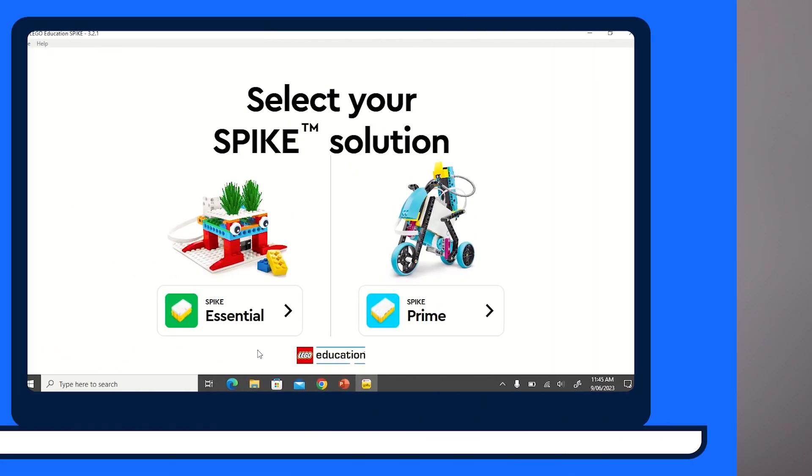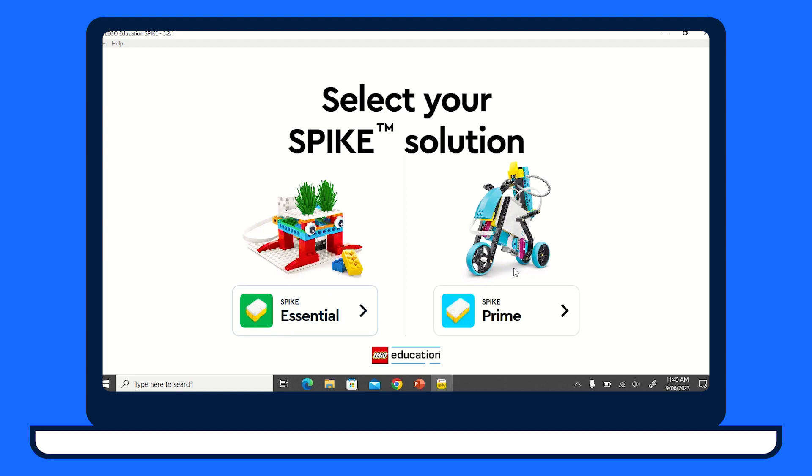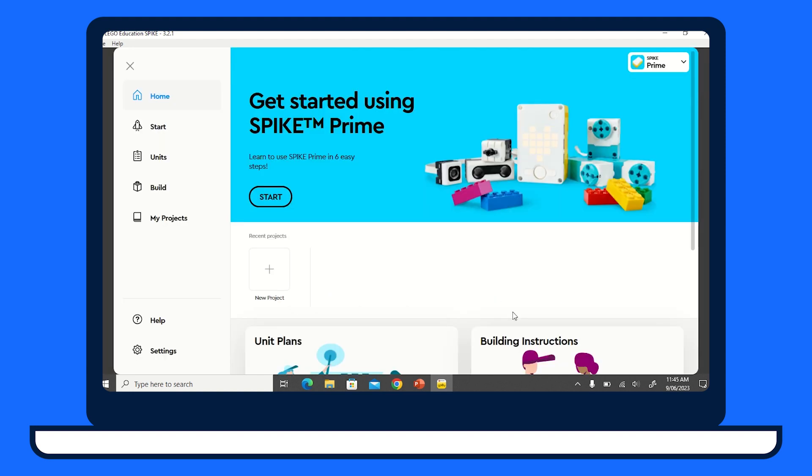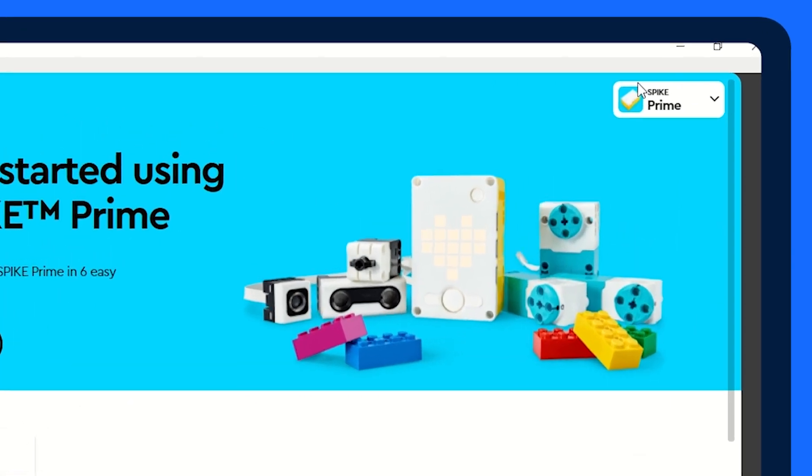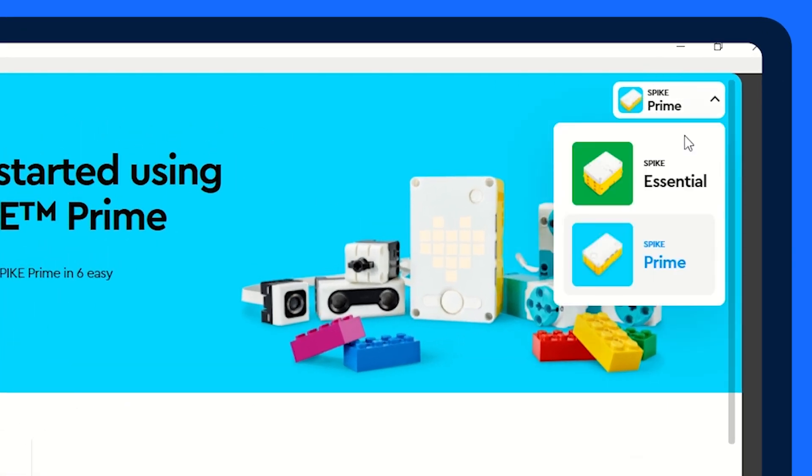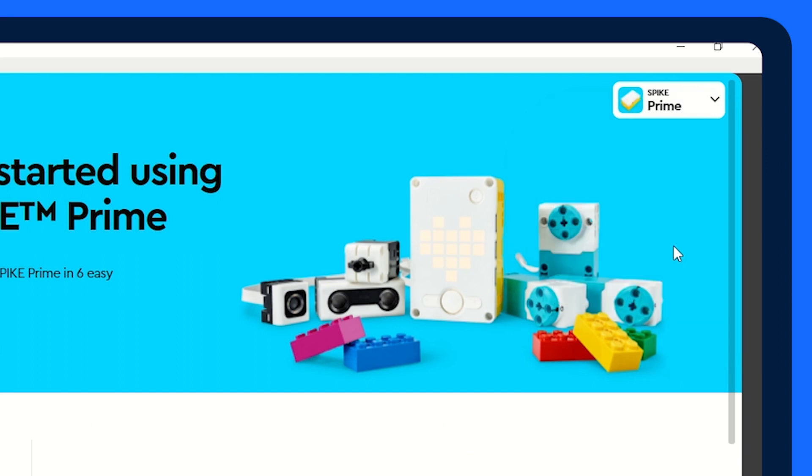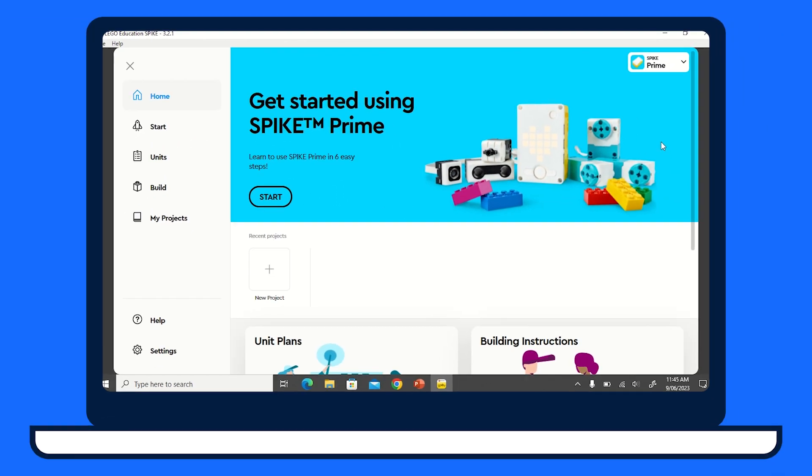To connect your hub to your device, you need to open the Spike Lego Education app. This app can be used for both the Spike Prime Lego Kit or the younger years version, Spike Essentials. For today's task, select the Spike Prime tile upon the startup of the app. You can easily change between the two by clicking the Lego Kit name in the top right hand corner of the window.